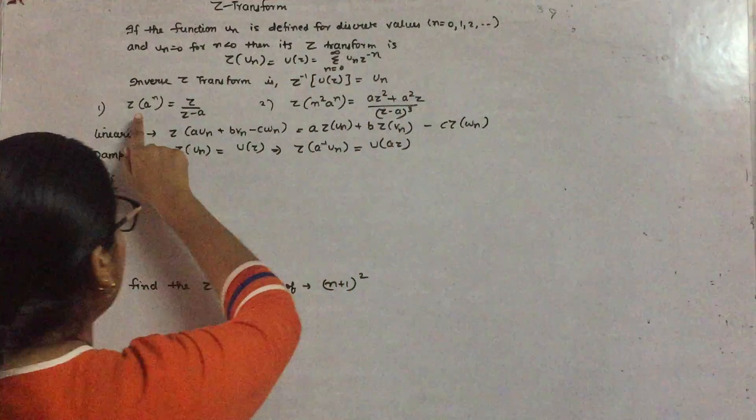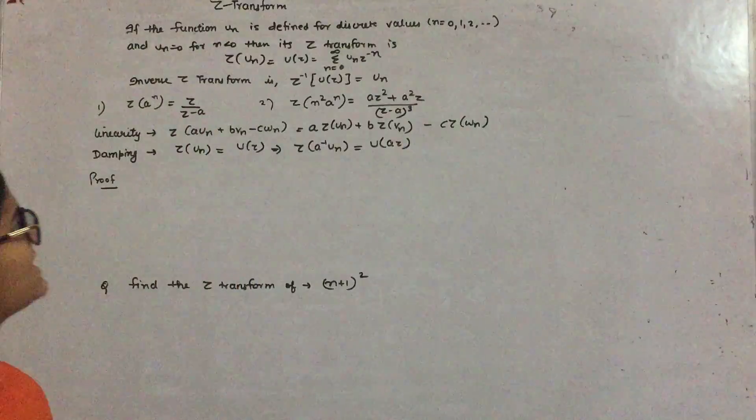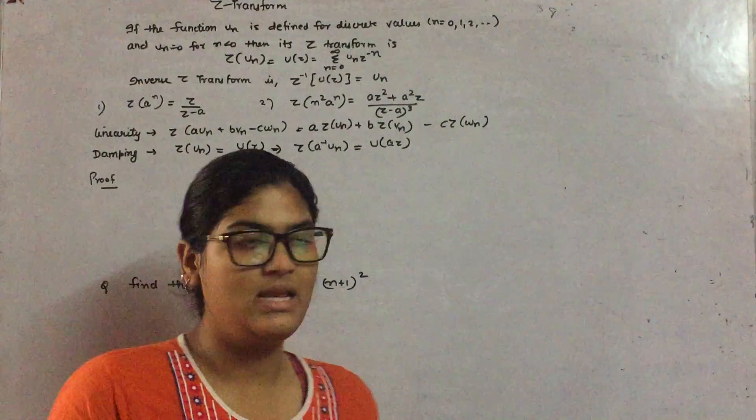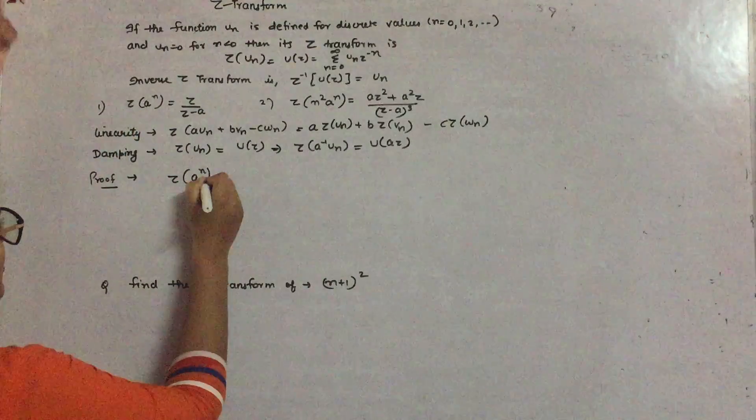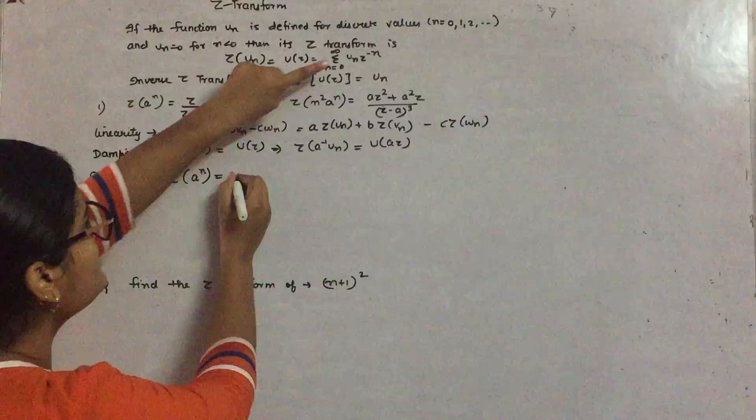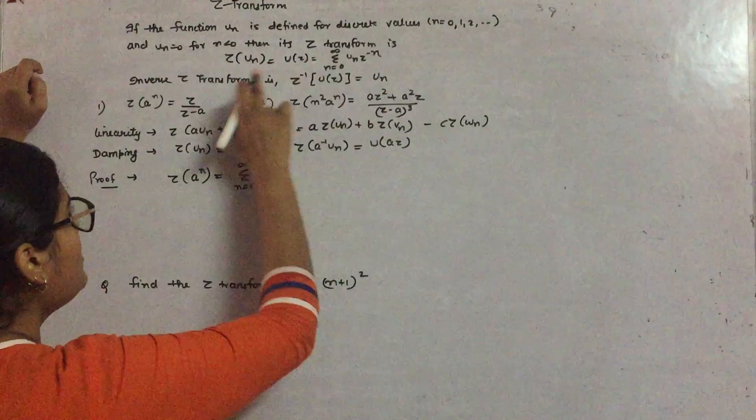Let us suppose we have to find out the value of Z transform of a raised to power n. It comes out to be Z upon Z minus a. How? Let us see. The formula is Sigma n equals 0 to infinity u(n), where u(n) is a^n here.